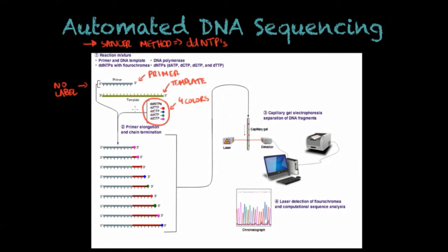One important thing to mention is that the previous labeling we did was radioactive—we labeled the primer with a radioactive component. Now on this one, we're going to label the DDNTPs with a fluorescent label.